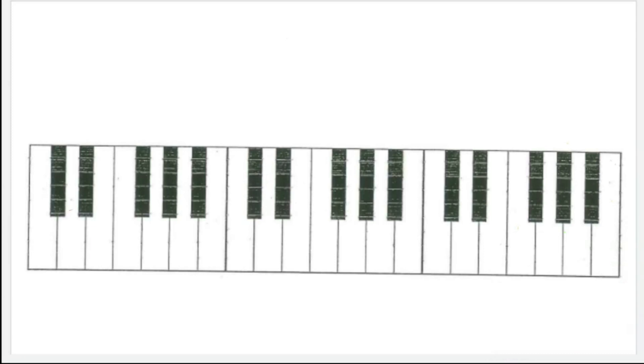Before we talk about the Dorian scale, we first need to define what a scale is. A scale is a series of half steps, represented by the following symbol, and whole steps, represented by the following symbol, that start and end on the same pitch name.